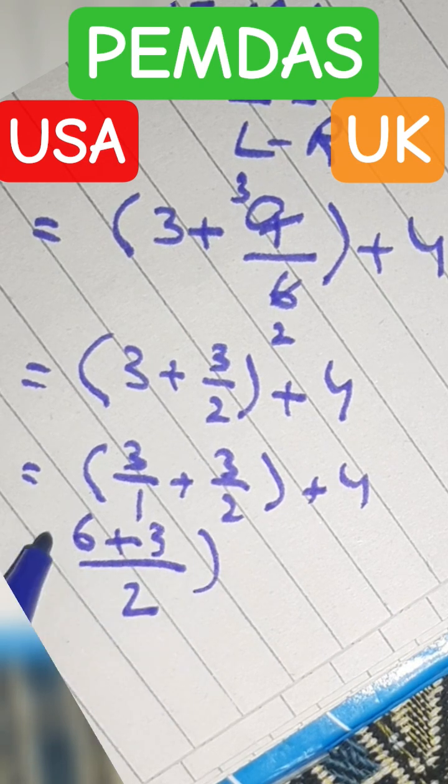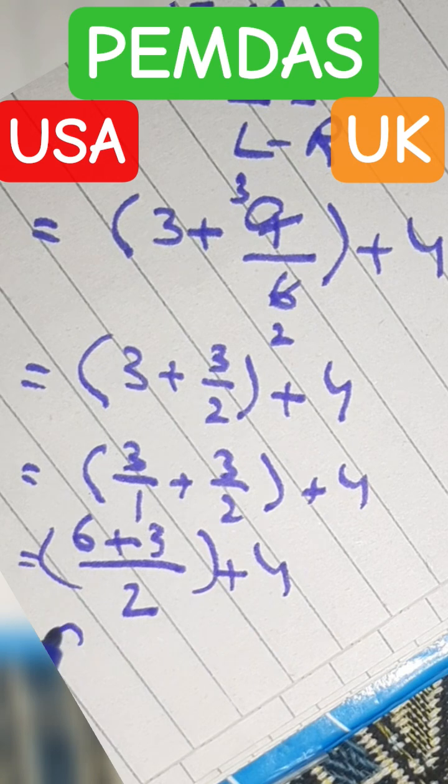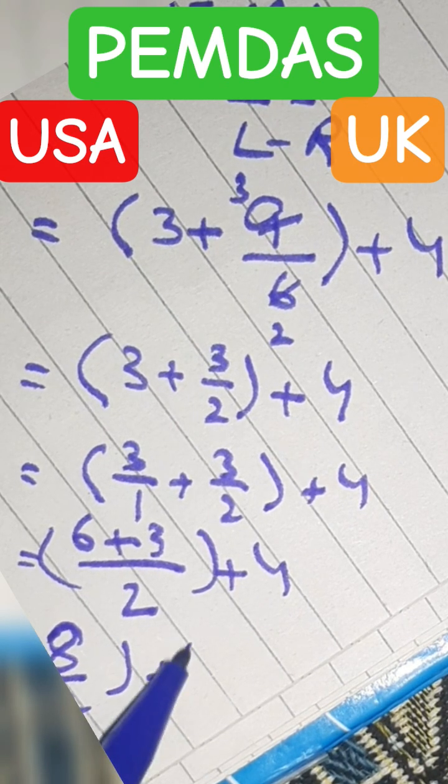Plus three and plus four. Six plus three is equal to eight upon two, and this is over plus four.